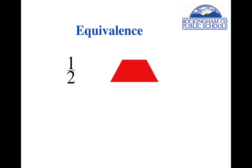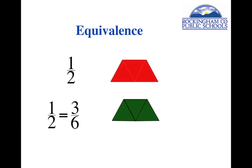Now I'm going to go the opposite direction with equivalence — starting with a fraction. Starting with one half, which is the red trapezoid, I'll ask: what other ways could we create this same shape? One way is to use green triangles. If I divided that red trapezoid into three equal parts, you can see that one half is equivalent to three sixths. You might notice another equivalence: a half is the same thing as a third plus a sixth, because if you take a blue and a green and put them together, you can make a red trapezoid.